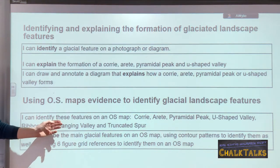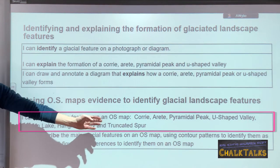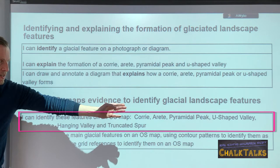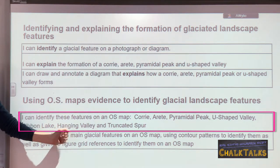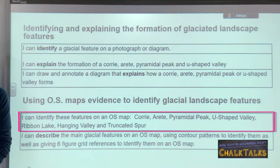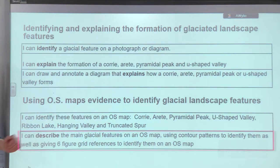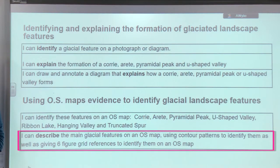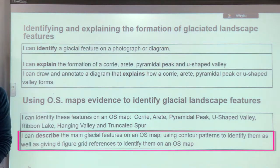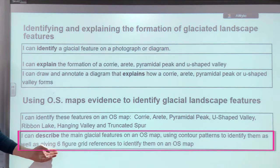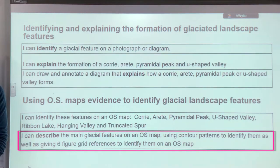The features you need to be able to identify include the Corrie, the Arete, the Pyramid Peak, and the U-shaped valley, but also include the Ribbon Lake, a hanging valley, and a truncated spur. A second learning outcome is your ability to describe these glacial features on the map using their contour patterns. Finally, you need to be able to use six-figure grid references to identify these different features on a map if you are asked to do so.